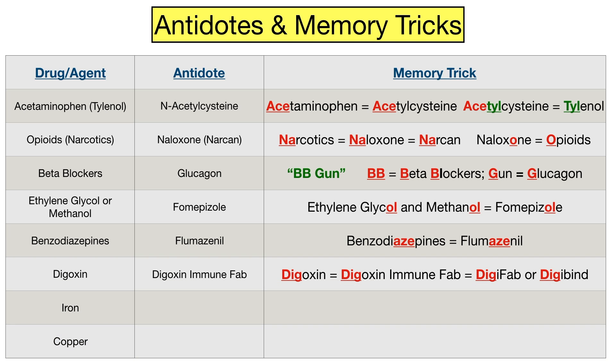The next toxicity on our table is iron. Do you know the treatment for iron toxicity? It's deferoxamine. The easy way to remember this is to think of the abbreviation for iron on the periodic table, which is F-E. Deferoxamine contains the letters F-E in it.